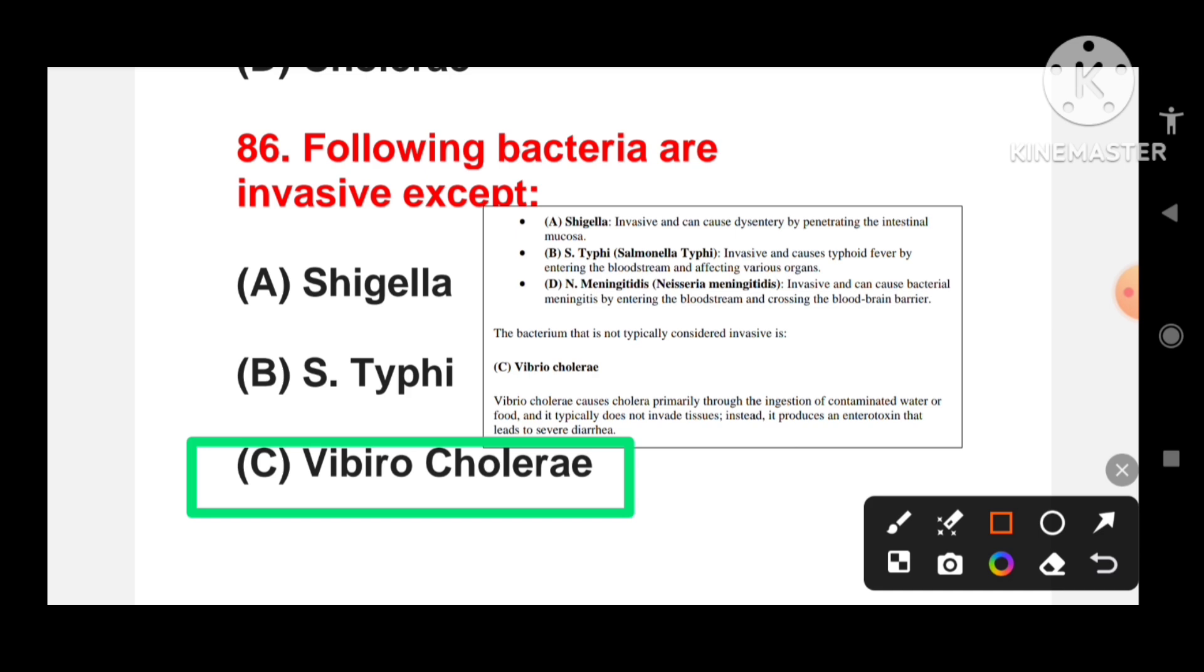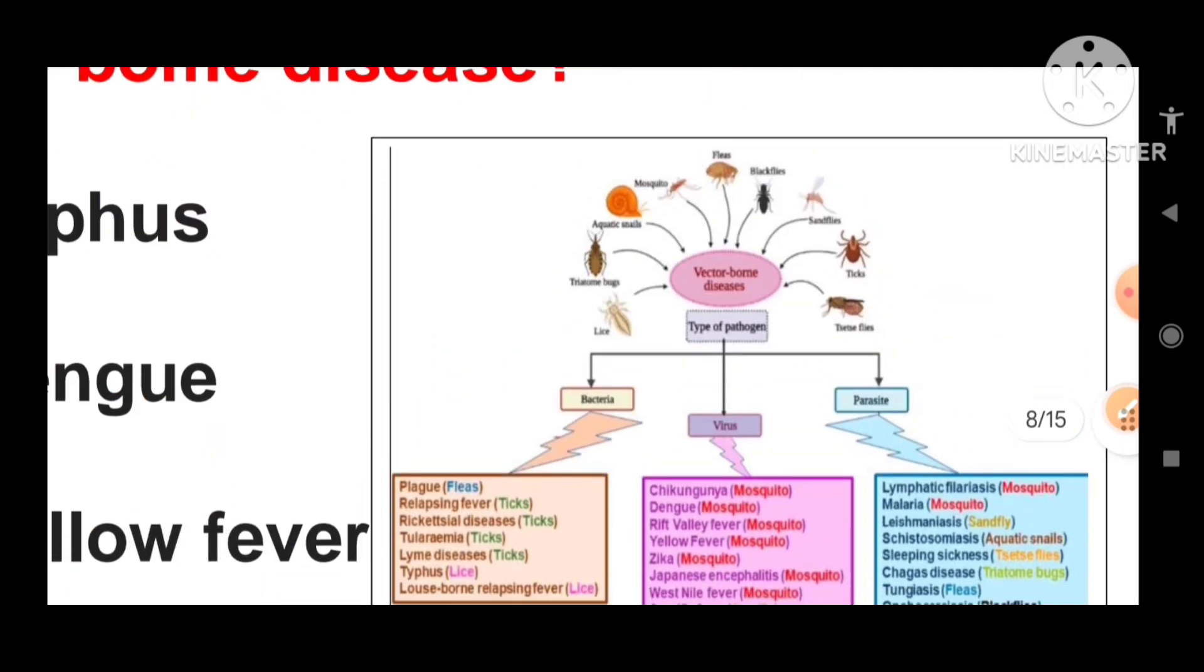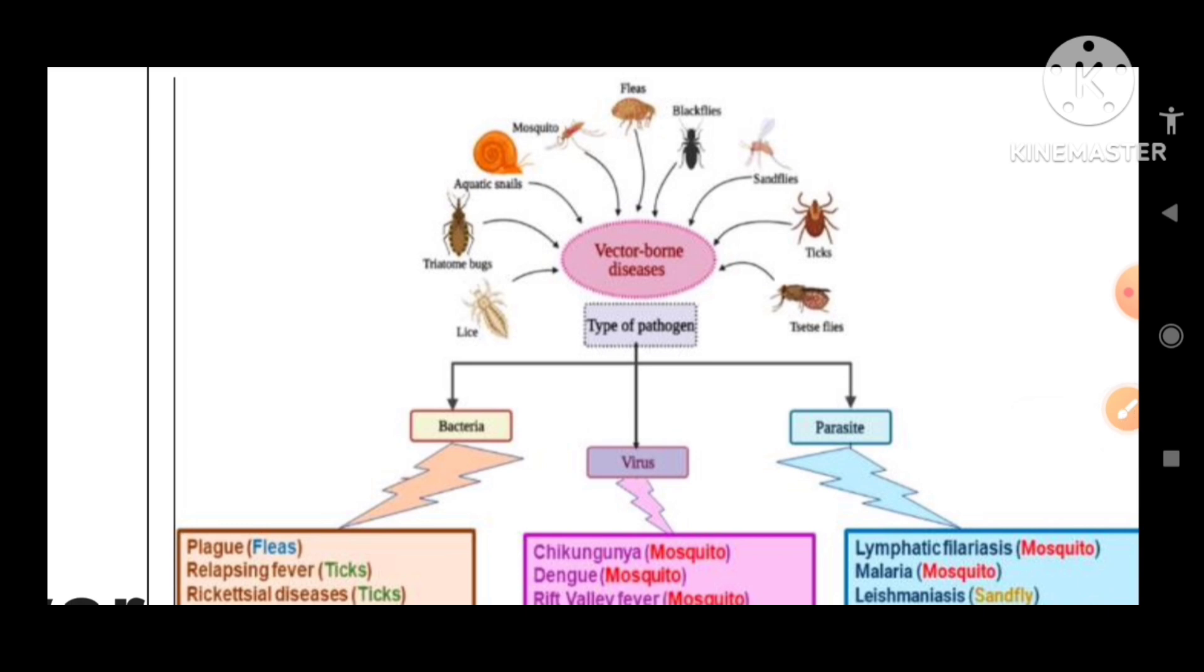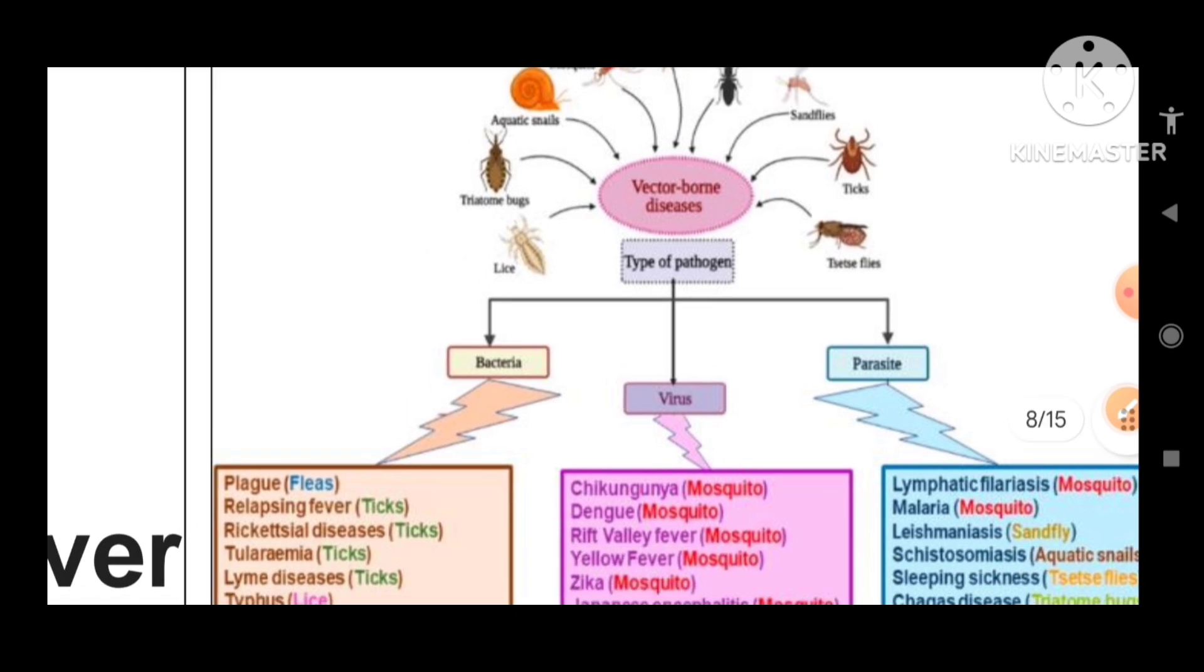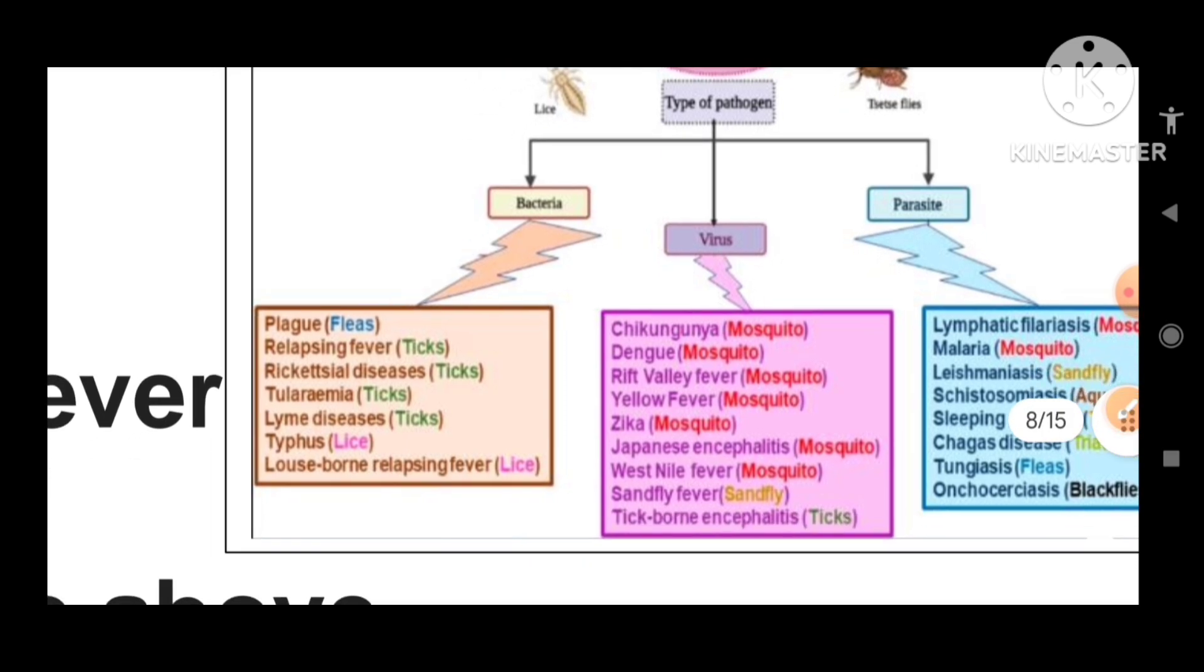Which of the following is vector-borne disease? Typhus, dengue, yellow fever or all of the above? These vector-borne diseases are caused by lice, mosquitoes, flies, ticks, and snails. In these, three types of pathogens are carriers: bacteria, viruses and parasites. Bacterial diseases include plague, relapsing fever, rickettsial disease, tularemia, lyme disease. Typhus is lice-borne and louse-borne relapsing fever.